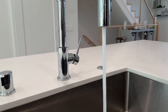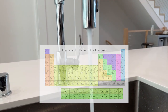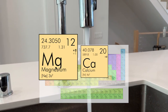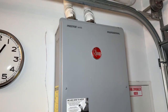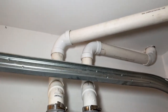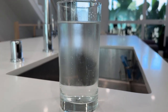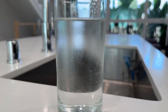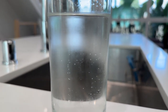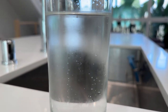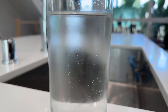Hard water due to high concentration of minerals like magnesium and calcium. Sediment caused by particle debris in your water heater. Air bubbles resulting from changes in water pressure or temperature, which can trap air in your hot water lines. This is known as aeration.